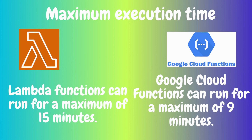The second point is maximum execution time. A Lambda function can run for a maximum of 15 minutes, while a Google Cloud Function can run for a maximum of 9 minutes. This means if you need to run a function for more than 9 minutes, you have to use AWS Lambda — there is no other option.